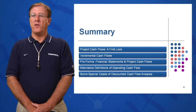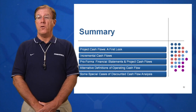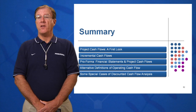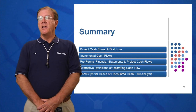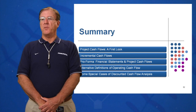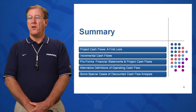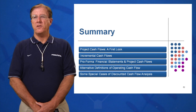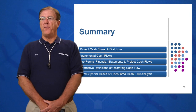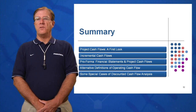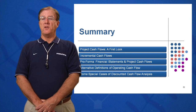Learning objective four covered four definitions of operating cash flow. The safest, always-applicable formula is the traditional approach: OCF equals EBIT plus D minus T. Three other approaches can be used when there is no interest expense. Finally, learning objective five presented three special cases of DCF analysis for projects without traditional sales — such as cost-savings projects or equipment with differing lives. Even in these cases, follow the same process: income statement, balance sheet, cash flow, then apply the session nine techniques.